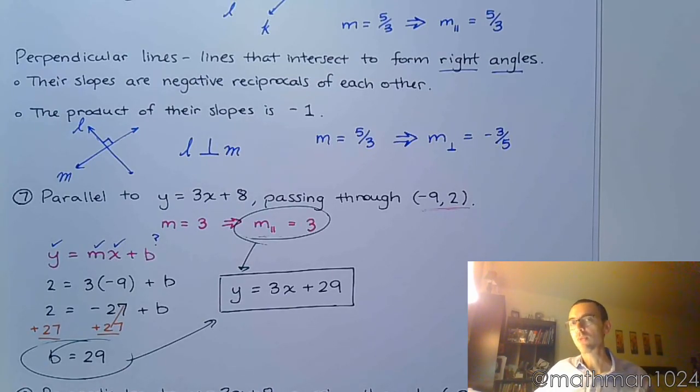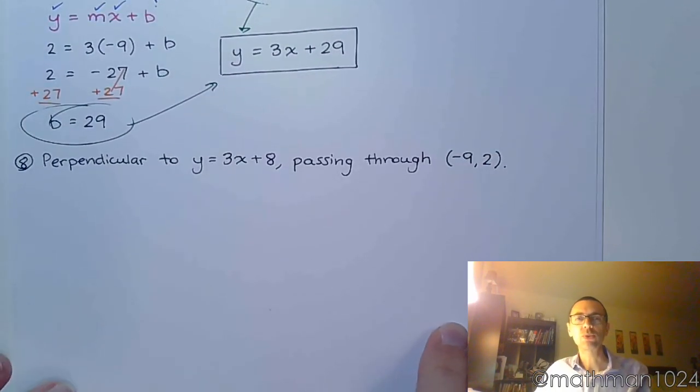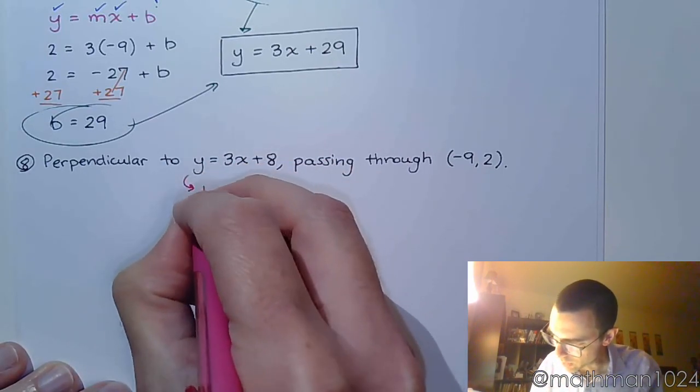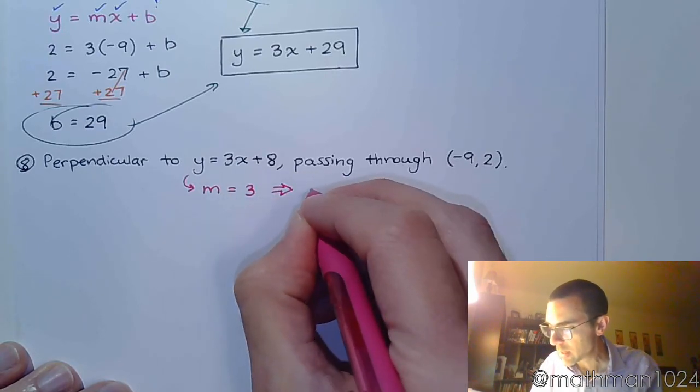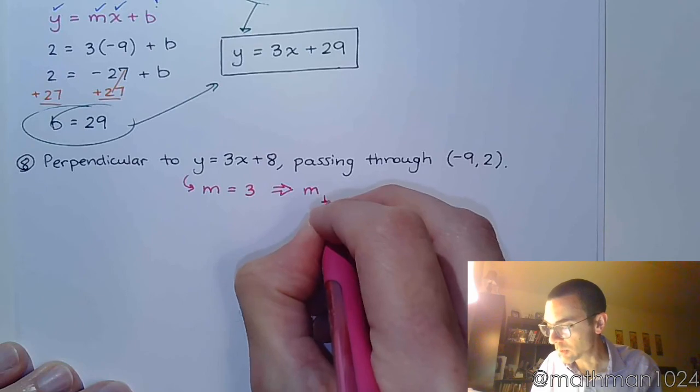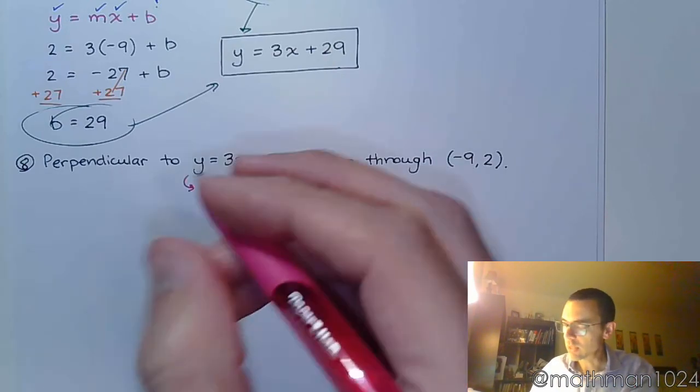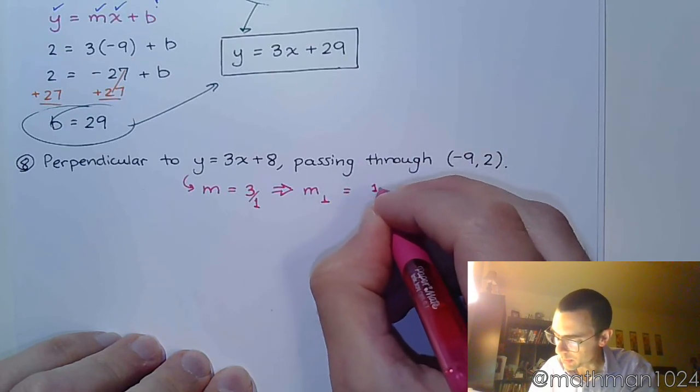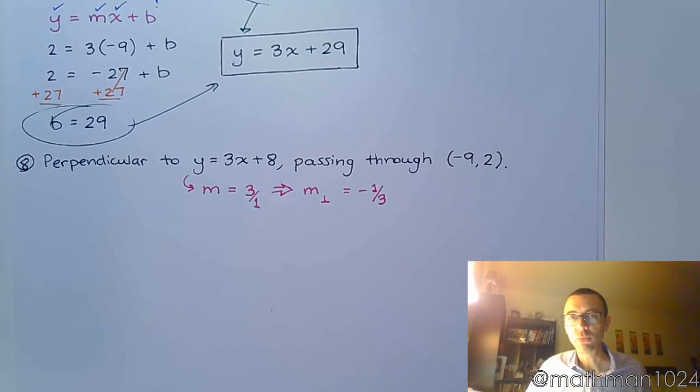Now what if I change the word from parallel to perpendicular? If I want to be perpendicular to y equals 3x plus 8. Well, just like we had above, from here we know that my slope is 3. But I want to know what is the perpendicular slope. And so the perpendicular slope is going to take this guy, flip it over, and change the sign. So this is understood to be over 1. So my perpendicular slope is negative 1 third.